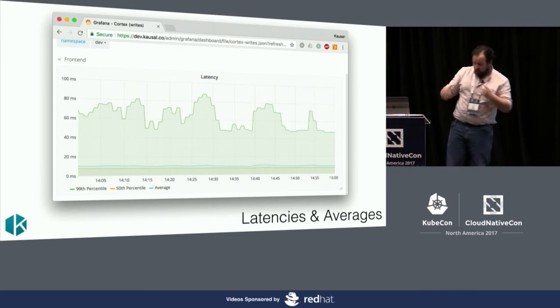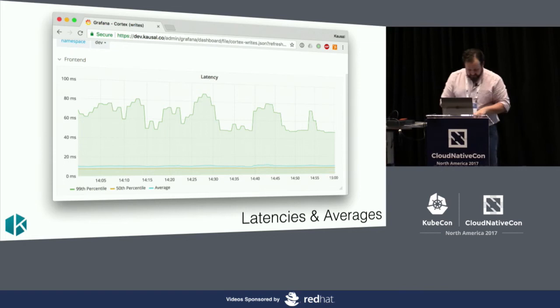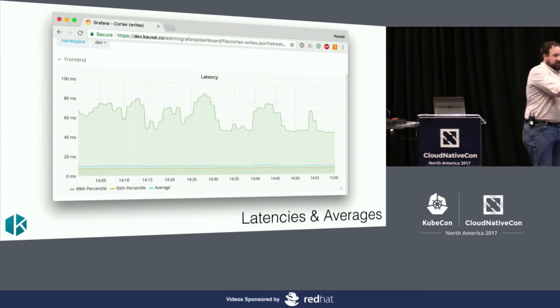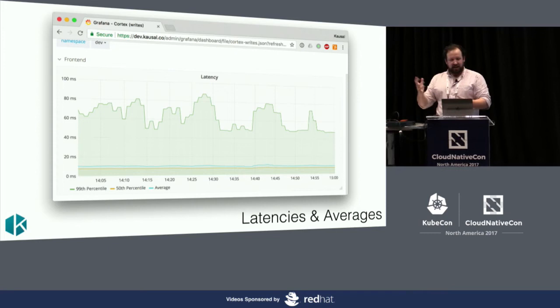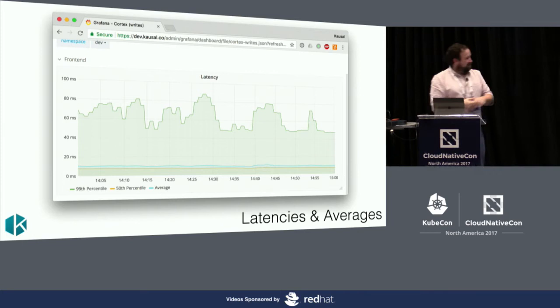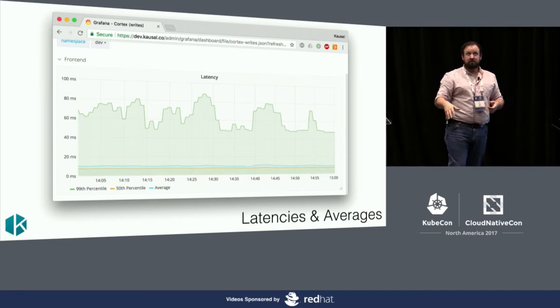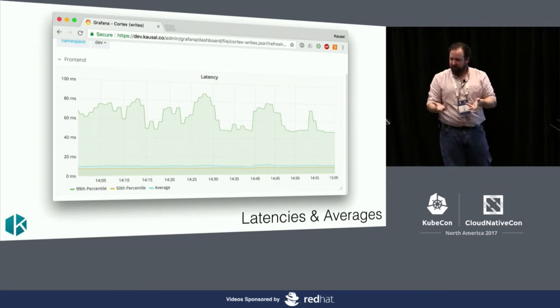Latencies don't sum like that — if you've got one service with really high latency and you look at the two services it calls, they can have really low latencies. But averages do sum: if you've got one service with a very high average, one of the ones below is also going to have a high average, which helps you pinpoint. The second reason is that averages can sanity-check whether you've got your buckets right. Sometimes you'll see a nice low latency because you've only declared buckets up to 100 milliseconds — and obviously it can't report more than that. Then you plot your average, which is sum divided by count, and you see it's at tens of seconds, realizing your buckets are wrong.